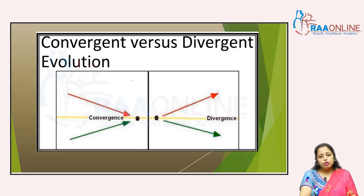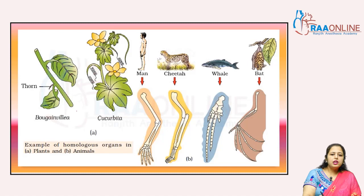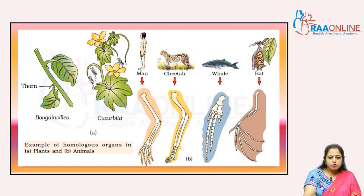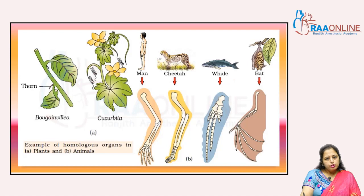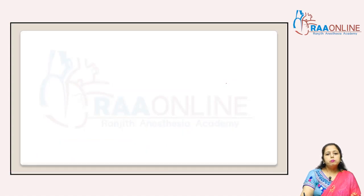You can see here: bougainvillea and cucurbita have the same ancestry and same structure but different functions. Similarly, man, cheetah, whale, and bat have the same structure but different functions. These are examples of homologous organs.